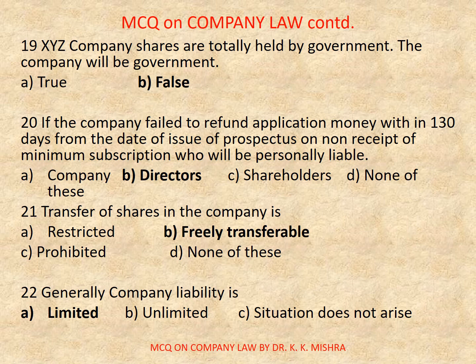Question number 20: If the company failed to refund application money within 130 days from the date of issue of prospectus on receipt of minimum subscription, who will be personally liable? Options are: A) Company, B) Directors, C) Shareholders, D) None of these. Correct option is B, Directors.